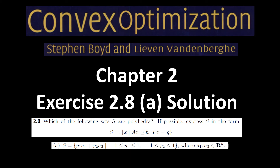In this video we are going to solve the eighth question of Chapter 2 Part A from the Convex Optimization book. Before jumping to the solution, let's spend some time and see what the problem is asking. Our goal is to show that S is a polyhedron. If you do not know what a polyhedron is, please refer to my video that goes over them thoroughly — I'll put a link in the description below.